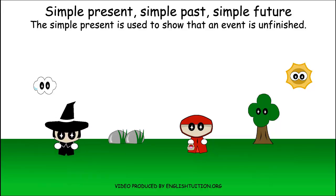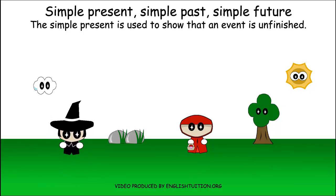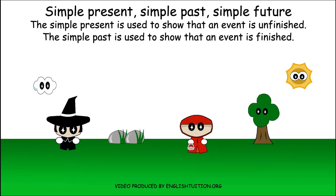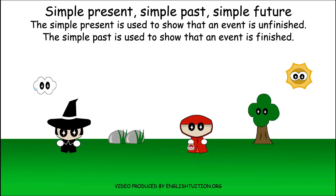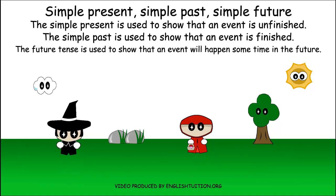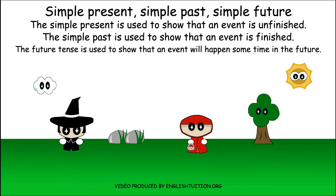The simple present is used to show that an event is unfinished — that means the event is not over yet. The simple past is used to show that an event is finished; that means the event happened in the past and it is over. The future tense is used to show that an event will happen sometime in the future.